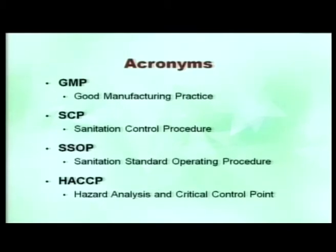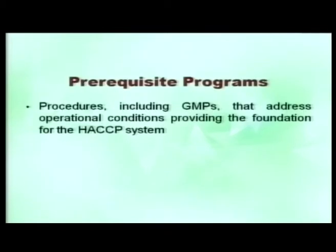Common acronyms for prerequisite programs used by food businesses include: GMP — Good Manufacturing Practices; GHP — Good Hygiene Practices; SCP — Sanitation Control Procedures; SSOP — Sanitation Standard Operating Procedures; SOP — Standard Operating Procedures; and HACCP — Hazard Analysis and Critical Control Point. Prerequisite programs are procedures including GMPs and GHPs that address operational conditions providing the foundation for the HACCP system — they are the basic conditions that must be in place before starting the actual HACCP program.